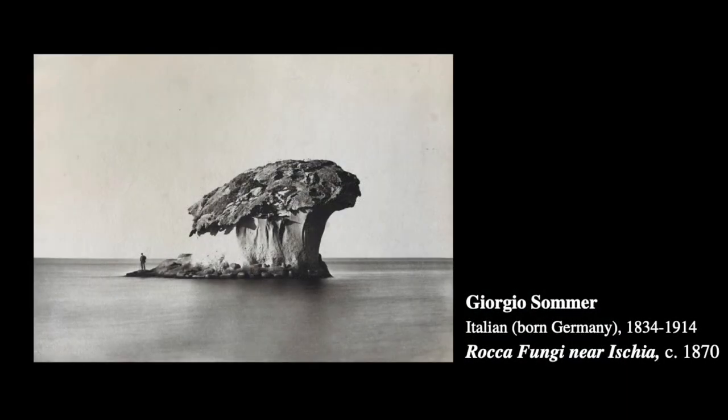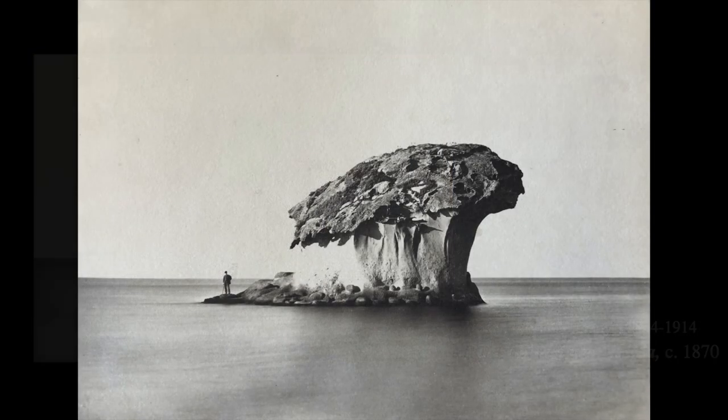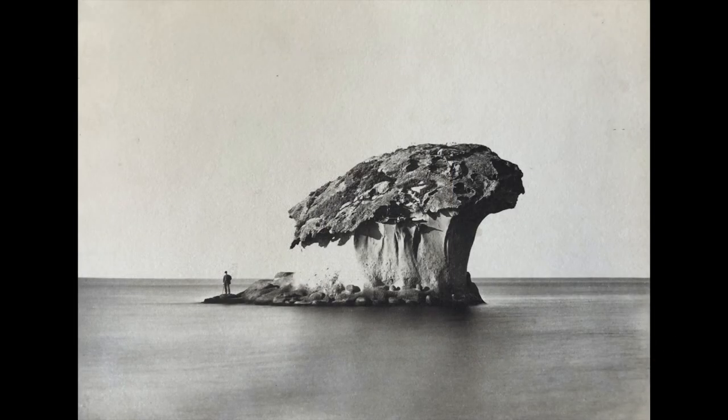Wiley shared more about the Summer photograph that inspired his work: "Summer made this image on the island of Ischia near Capri around 1870. The formation is called Roka Fungi, or Mushroom Rock. I saw a print in the early 1980s and loved the form, as well as the isolation, due to the long exposure, making the water disappear. Better prints show the water more, but it's always an ambiguous space due to the lengthy exposure."